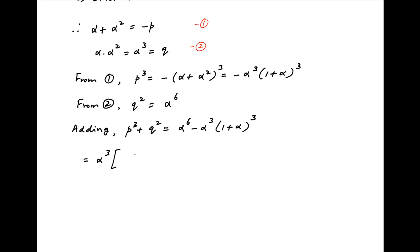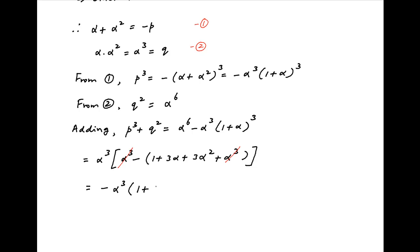On the right hand side, taking alpha cubed as a common factor, we get alpha cubed times [alpha cubed minus (1 plus alpha) cubed], which can be written as (1 plus 3alpha plus 3alpha squared plus alpha cubed). Alpha cubed cancels within the square brackets, and therefore the right hand side simplifies to minus alpha cubed times (1 plus 3alpha plus 3alpha squared), which can be written as minus alpha cubed minus 3 times alpha cubed times (alpha plus alpha squared).